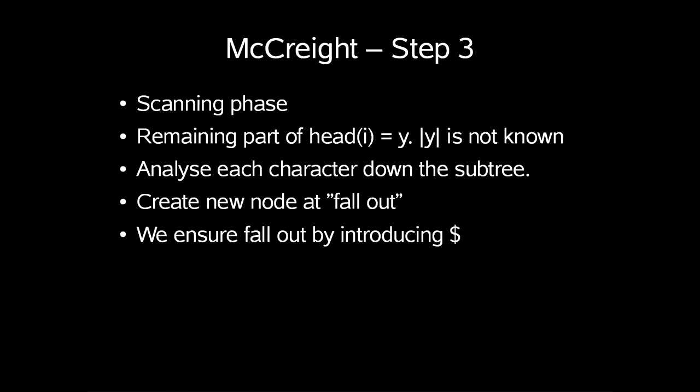Last step is the scanning phase. Let's denote the remaining part of the characters in head(i) by y. The length of y is not known beforehand, thus we have to analyze each character down the subtrees until we fall out of the tree. At the position where we fall out we create a new node and the remaining part of suffix i will be labeled the leaf created from the new node. Note that the insertion of a unique termination symbol ensures that the matching will fall out at some stage.